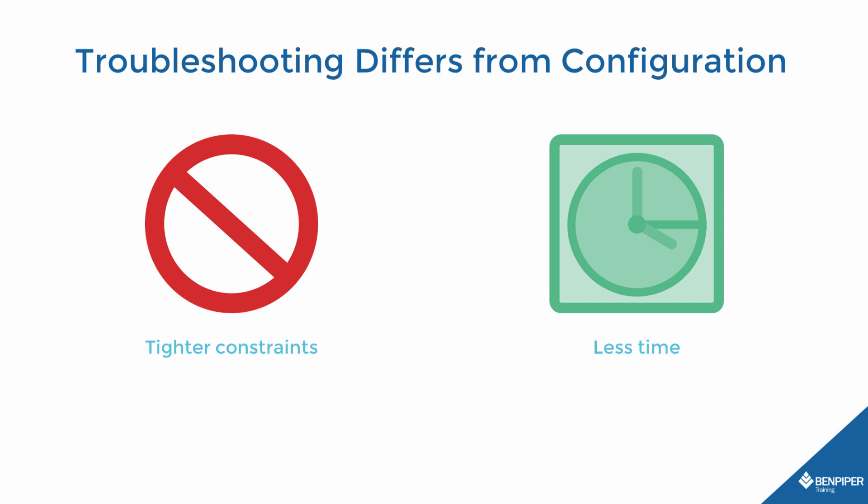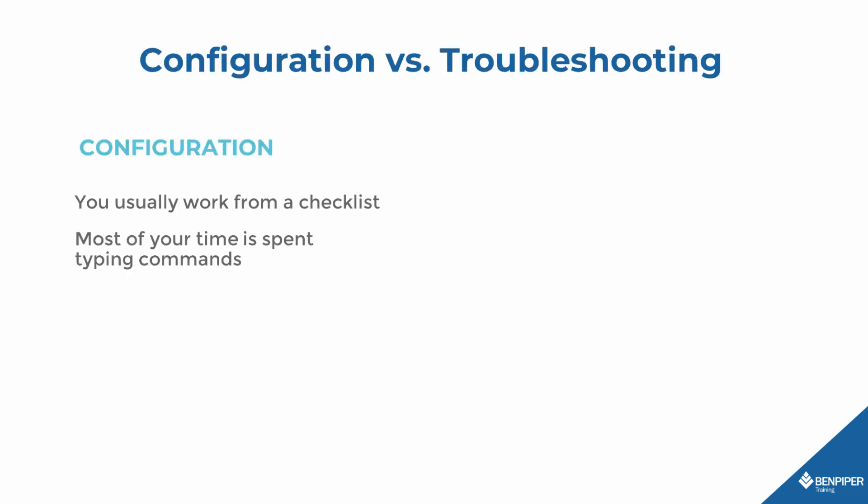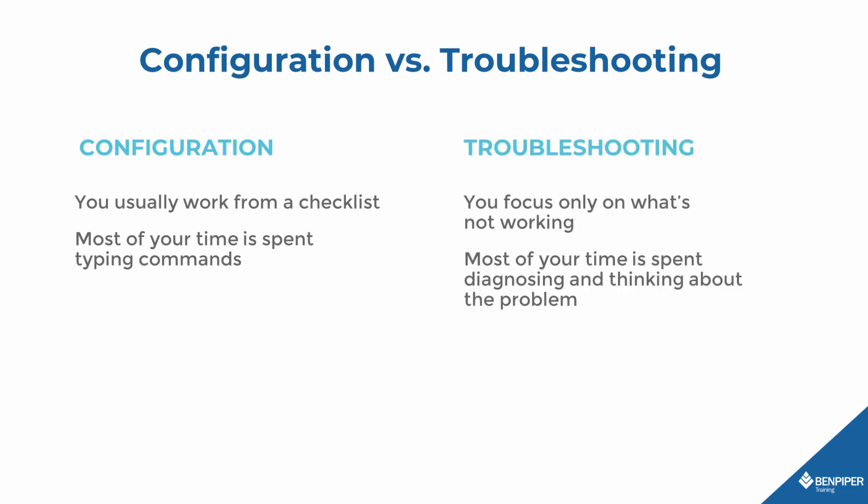The second difference between configuration and troubleshooting is that when troubleshooting, you generally have less time than you would just performing a rote configuration. When you're configuring a device, you have a checklist that you must complete — even if it's just in your mind. You think: I've got to configure my IP addresses, routing, ACLs, and so on — check, check, check. When doing a configuration, you check everything on your list and probably go over it more than once. But contrast that with troubleshooting, wherein you focus only on what is not working, leaving the rest alone unless it becomes relevant to the problem.